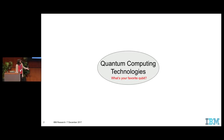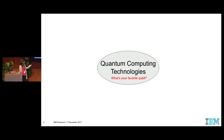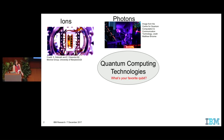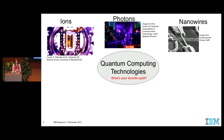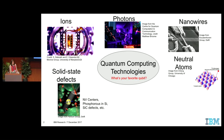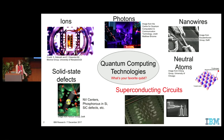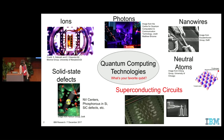So quantum computing technologies. There are many types of quantum computing technologies, and you could ask: what's your favorite qubit? Some might answer ions, photons, nanowires, solid state defects, neutral atoms. But at IBM, we like superconducting circuits. So in this talk, I'm going to focus on superconducting circuits.